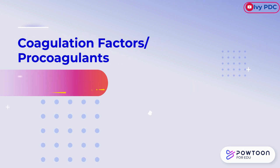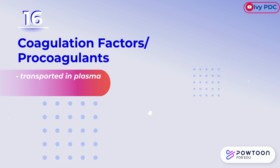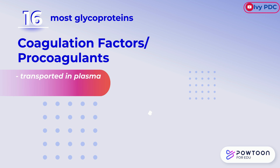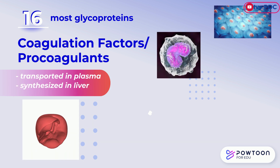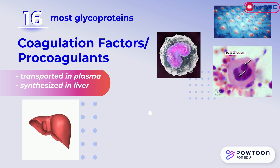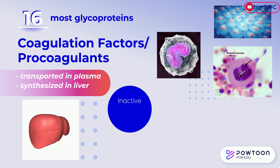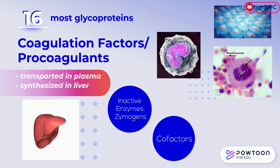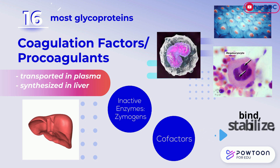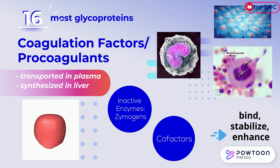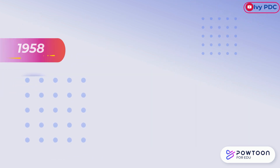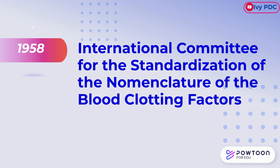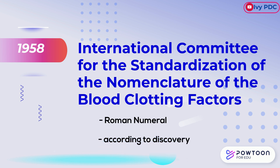The coagulation factors, also called procoagulants, are transported in the plasma. There are 16 coagulation factors. Most are glycoproteins synthesized in the liver, although monocytes, endothelial cells, and megakaryocytes produce a few. Some factors are enzymes that circulate in inactive forms called zymogens, and the others are cofactors — these bind, stabilize, and enhance the activity of these enzymes. In 1958, the International Committee for the Standardization of the Nomenclature of the Blood Clotting Factors officially named the plasma procoagulants using Roman numerals in the order of their initial description or discovery, and not their sequence in the coagulation cascade.